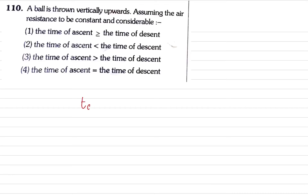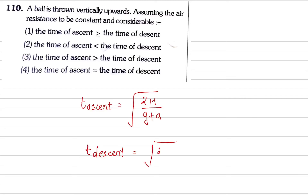We have studied the formula in our regular classes that time of ascent is √(2h / (g + a)) and time of descent is √(2h / (g - a)).